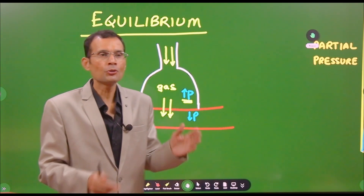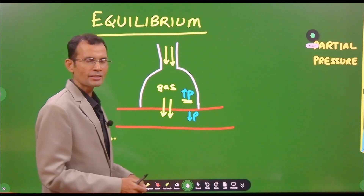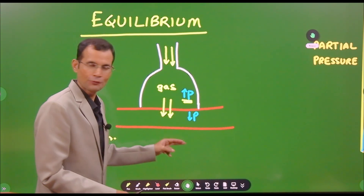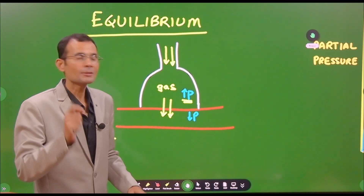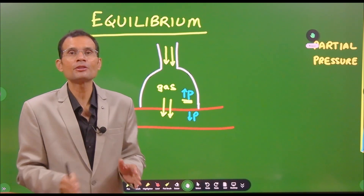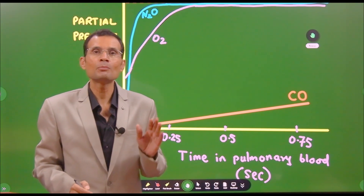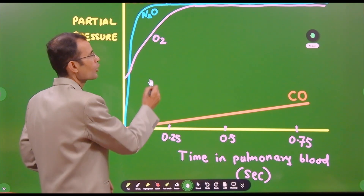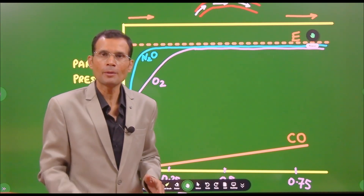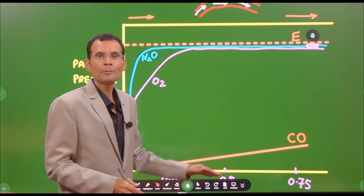The gas that instantly reached equilibrium stopped diffusing instantly — we could not measure the diffusing capacity. But this other gas continues to diffuse because its partial pressure in the pulmonary capillary blood is not rising. It keeps diffusing. That gas is carbon monoxide. And therefore, carbon monoxide is chosen — it can be used to measure the diffusing capacity of the respiratory membrane. That is what is shown in this graph: the behavior of carbon monoxide across the respiratory membrane and its comparison with other gases.